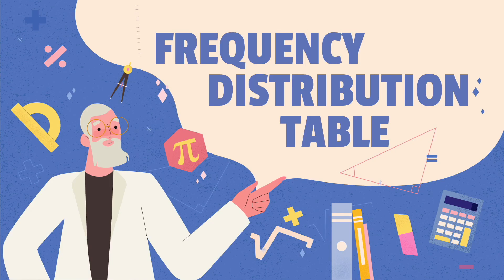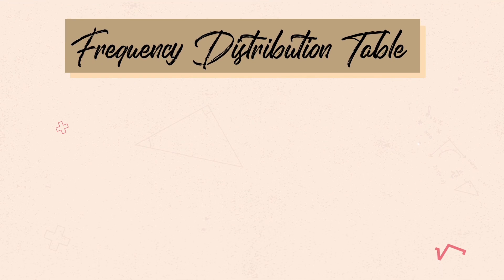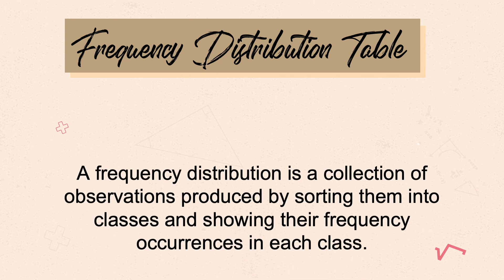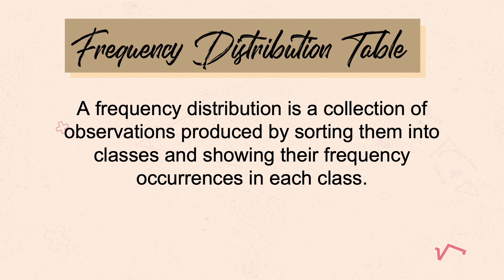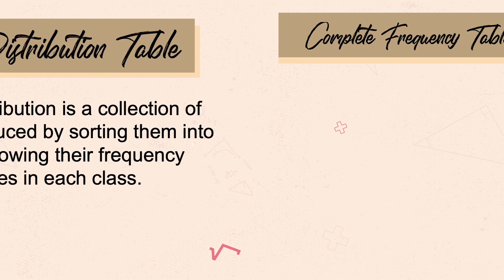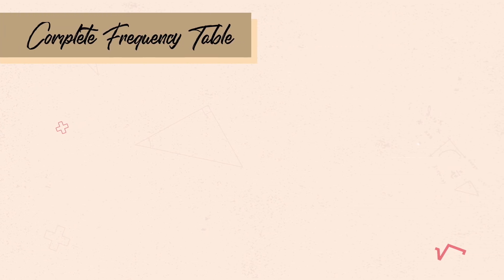Welcome to the new discussions on statistics. This is about constructing a frequency distribution table — the table that statisticians usually use when dealing with very large sample sizes. A frequency distribution table is a collection of observations produced by sorting them into classes and showing their frequency occurrences in each class.